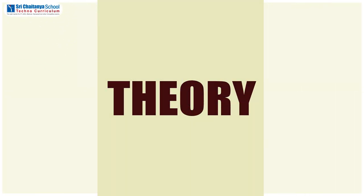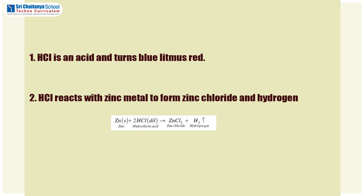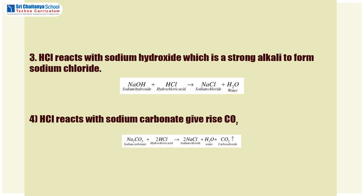The theory of this experiment is: HCl is an acid and turns blue litmus red. HCl reacts with zinc metal to form zinc chloride and hydrogen: Zn + 2HCl → ZnCl₂ + H₂. HCl reacts with sodium hydroxide, a strong alkali, to form sodium chloride: NaOH + HCl → NaCl + H₂O. HCl reacts with sodium carbonate to give CO₂: Na₂CO₃ + 2HCl → 2NaCl + H₂O + CO₂.